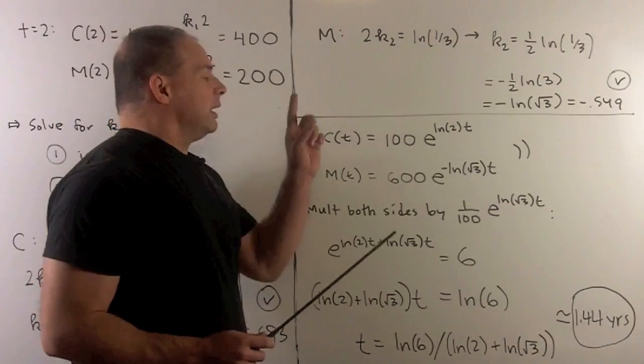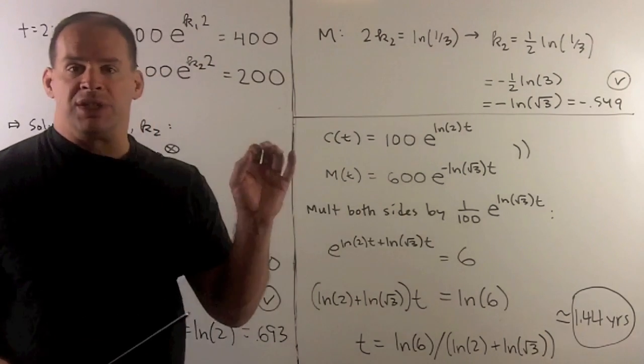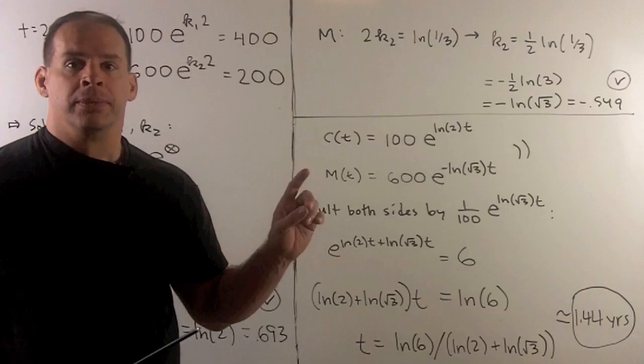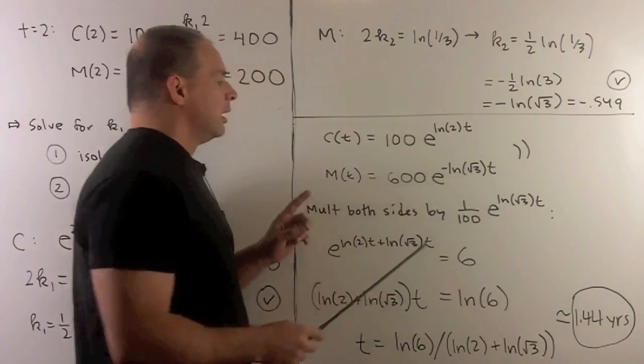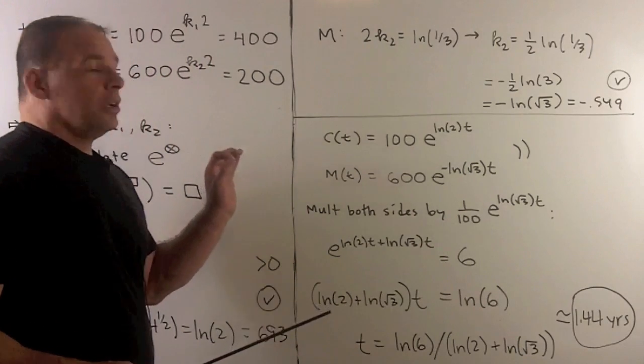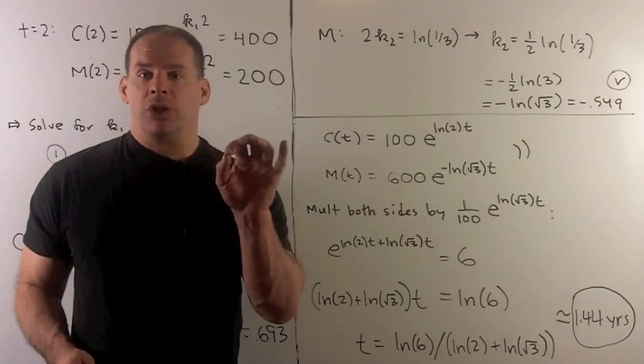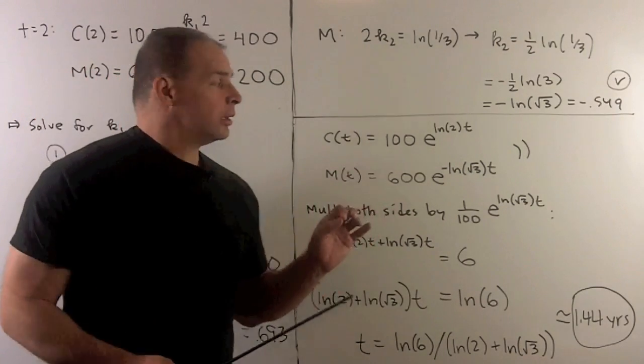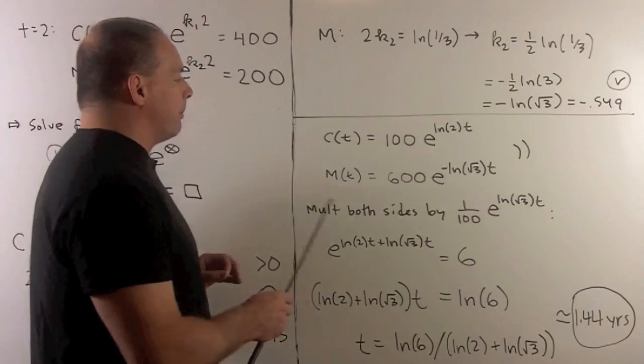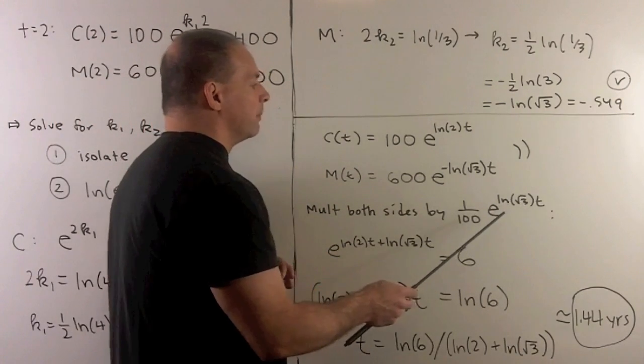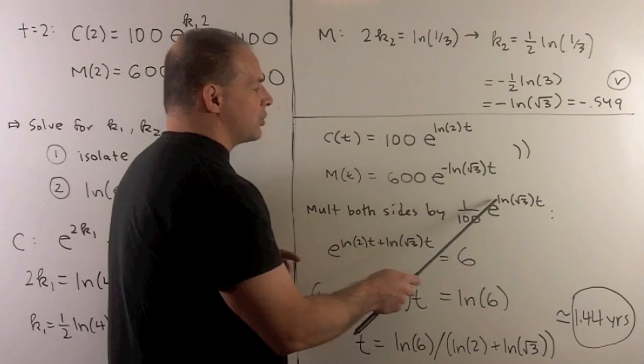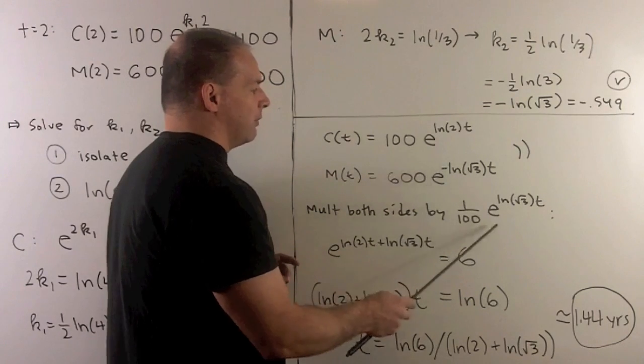Now, that means we have the equations for C(t) and M(t). We're going to set these equal to one another and then solve for t. Again, I want to isolate an exponential and then we'll apply natural log. So I'm going to multiply both sides by 1 over 100 times e to the natural log square root of 3t. The plus sign here is going to make sure that these two cancel to give me a 1.